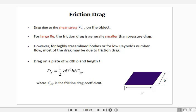Drag due to shear stress is called friction drag. At large Reynolds number, friction drag is usually small compared to pressure drag, because viscous effects are relatively low when inertial effects dominate. However, for highly streamlined bodies or for low Reynolds number flow, most of the drag may be due to friction drag.